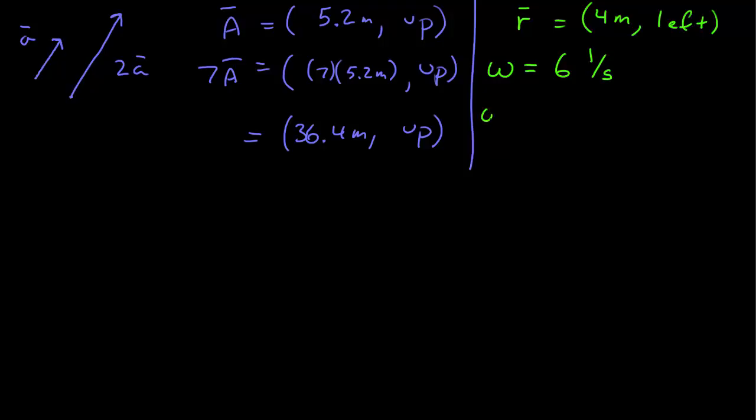Then the combination omega r vector is equal to the combination 6, 1 over seconds, times 4 meters as the magnitude, and it is also to the left. So we get 24 meters per second to the left.